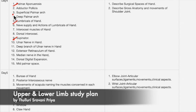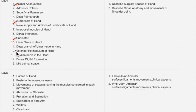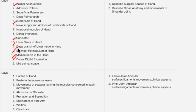Other important short answer topics for day four include: lumbricals of the hand, dorsal digital expansion, extensor retinaculum of the hand, median nerve, ulnar nerve, radial nerve, axillary nerve, and musculocutaneous nerve. All these nerves are important — study all five nerve questions without skipping any topic. Also include superficial palmar arch and deep palmar arch.